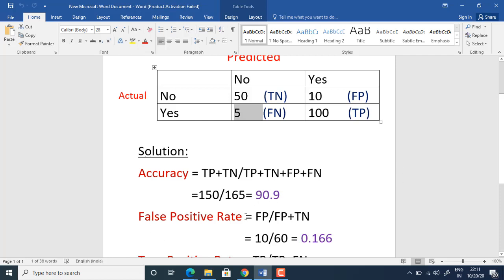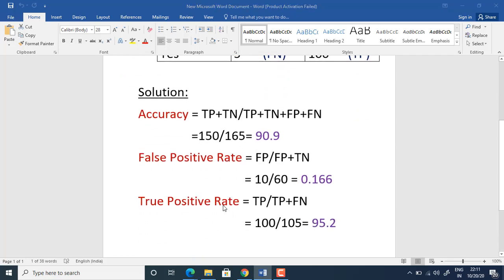Similarly, I have found out the false positive rate also. For false positive rate, the formula is FP by FP plus TN. Substitute the given values in this formula and we will be getting 0.166 as a false positive rate. Similarly, true positive rate formula is TP by TP plus FN. So by substituting the given values, we will be getting around 95% as a true positive rate.